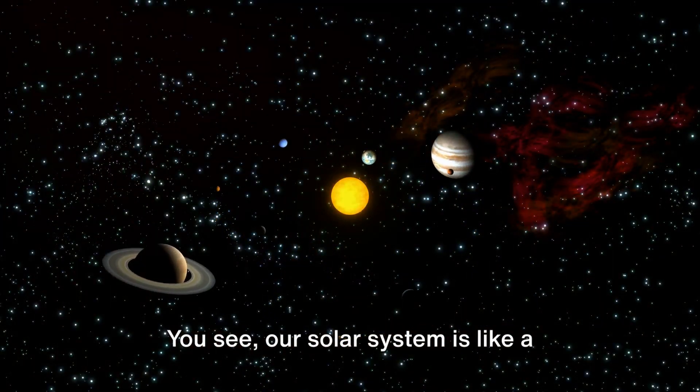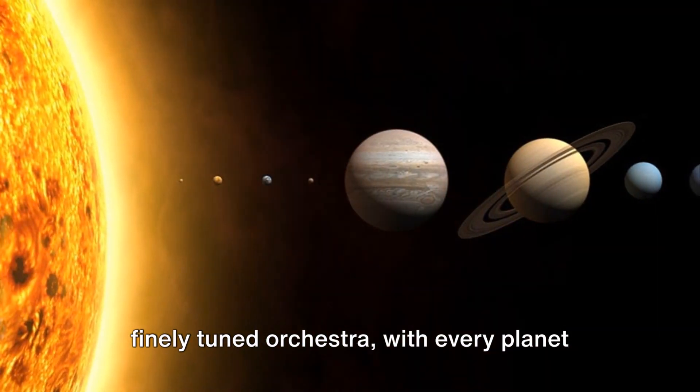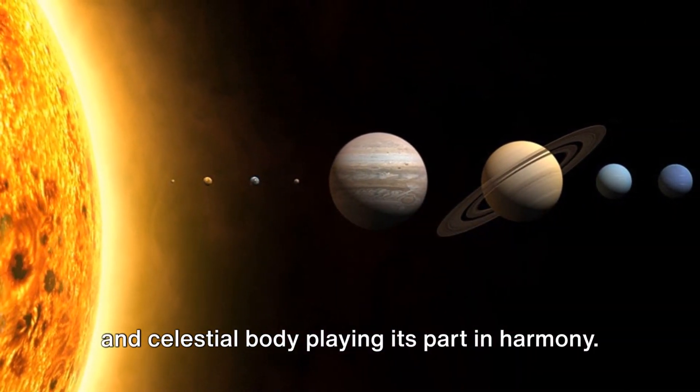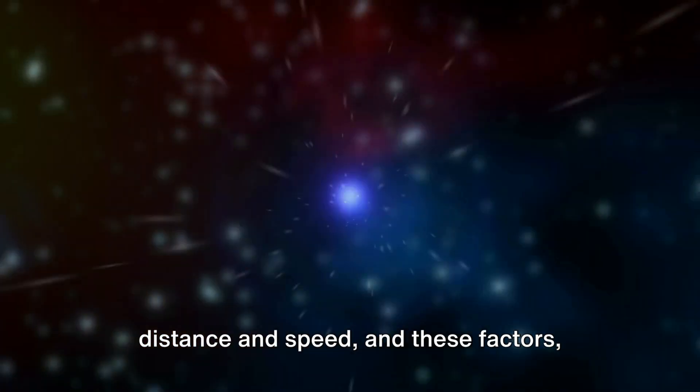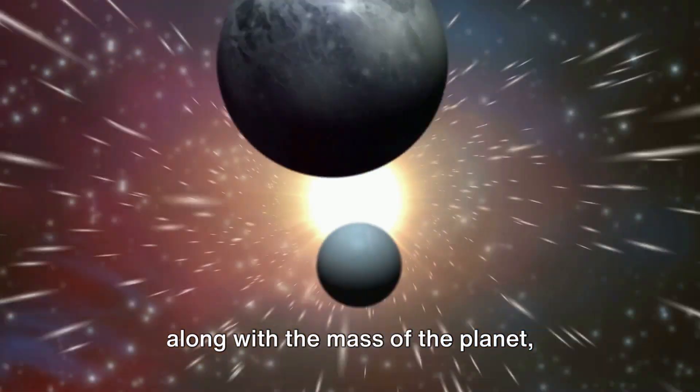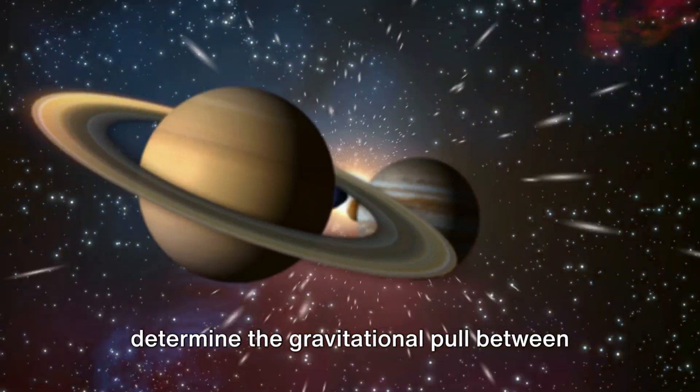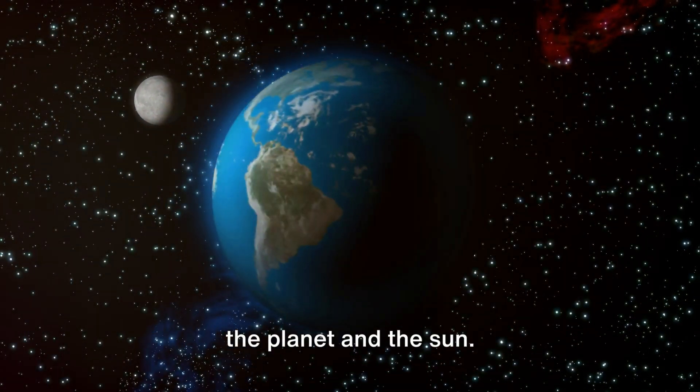You see, our solar system is like a finely tuned orchestra, with every planet and celestial body playing its part in harmony. Each planet orbits the Sun at a certain distance and speed, and these factors, along with the mass of the planet, determine the gravitational pull between the planet and the Sun.